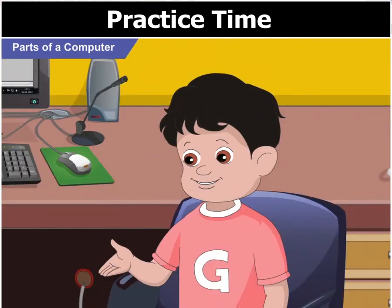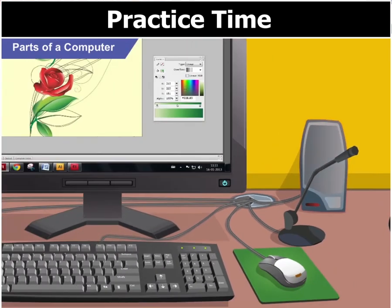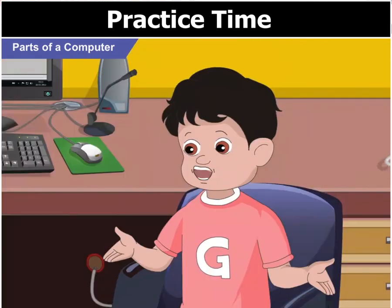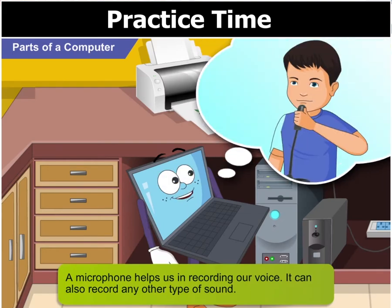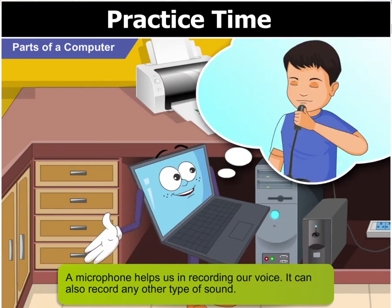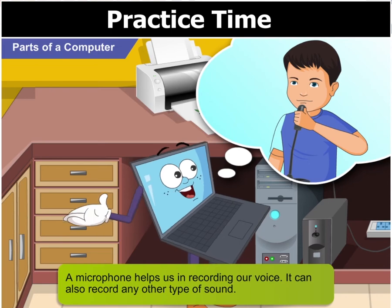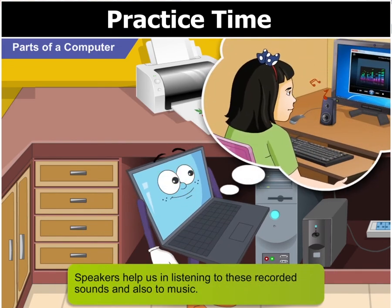What are these things on the table? This here is a microphone, while these are speakers. When the microphone and the speakers are attached to a computer, they form the sound system of the computer. By speaking into a microphone, you can record your voice. In fact, a microphone can be used to record different types of sounds, and not only your voice. The speakers help us to listen to these recorded sounds, as also to music.